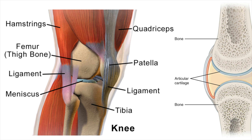The head of each bone meet and they are covered by articular cartilage, which is a smooth material that reduces friction. There are two thick pads which cushion between the tibia and fibula called menisci. They're made from cartilage and act as cushions to reduce friction and pressure.